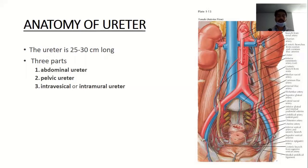Urologically, we divide the ureter into three parts: the upper part that extends from the kidney to the upper border of the sacroiliac joint, the middle portion that runs in front of the sacroiliac joint, and the lower portion that extends from the inferior border of the sacroiliac joint up to the urinary bladder.